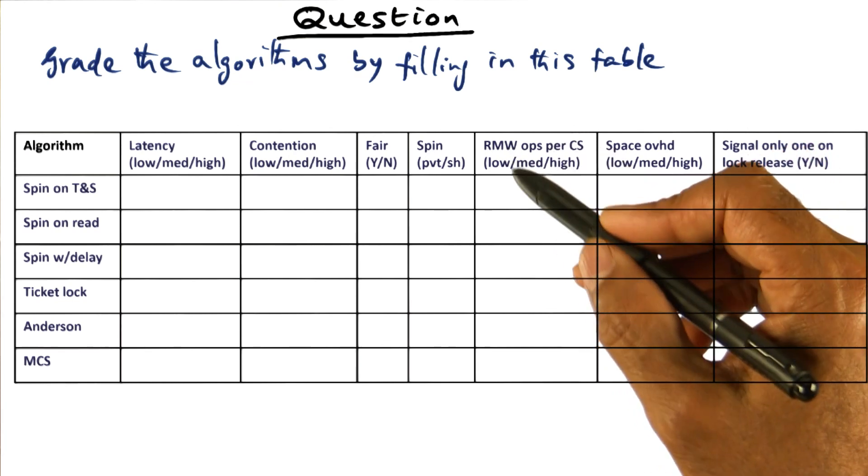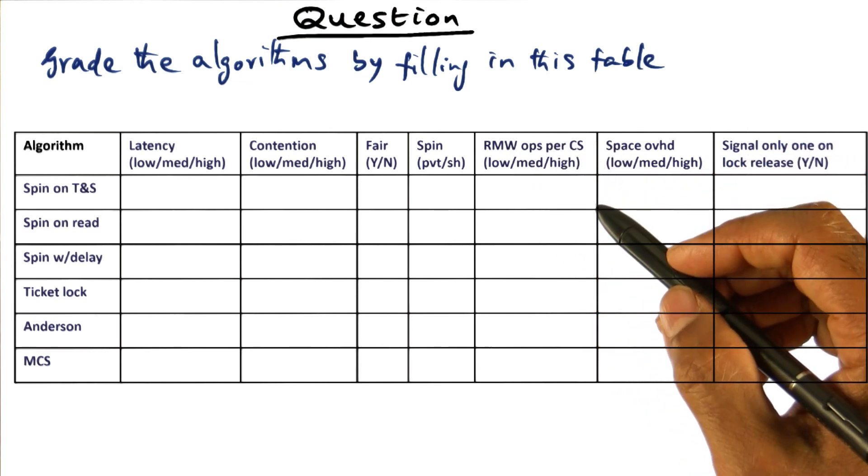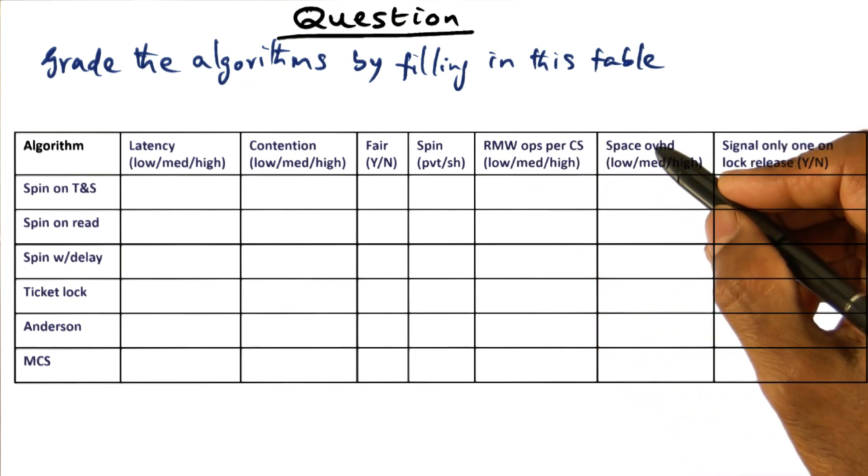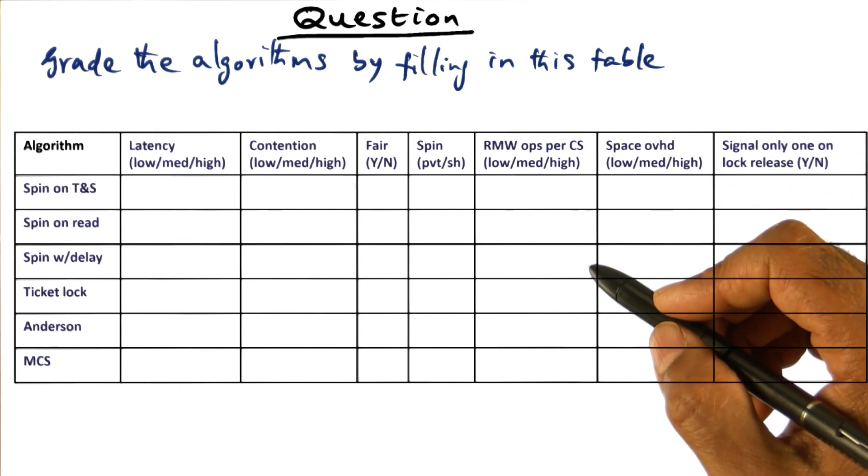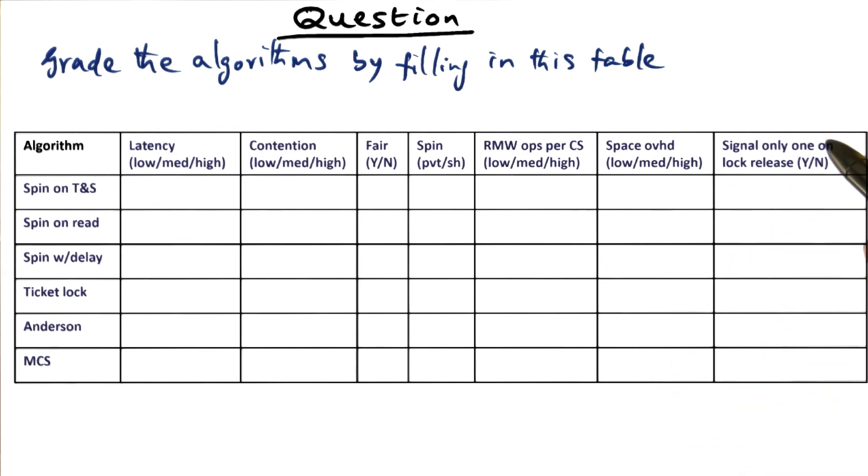How many read-modify-write operations are required for acquiring a lock? What is the space overhead associated with the lock? And when the lock is released, are we signaling one process or everybody? These are all different attributes you can associate with these different lock algorithms.